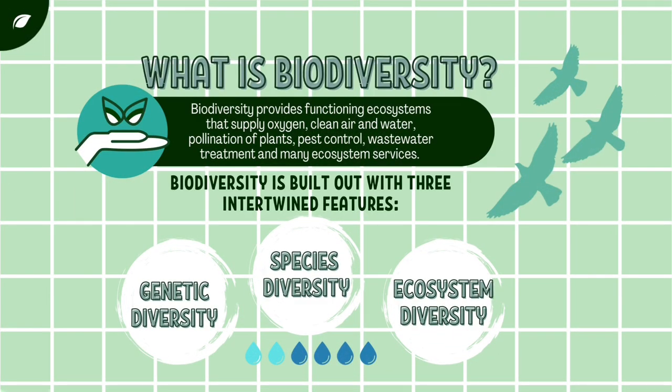Isn't it interesting to know that you share this world with millions of other species that you didn't even know? In this chapter, we will look into the types of biodiversity in greater depth. We are sure it will take you into a different world altogether. Biodiversity is built out of three intertwined features: genetic diversity, species diversity, and ecosystem diversity.